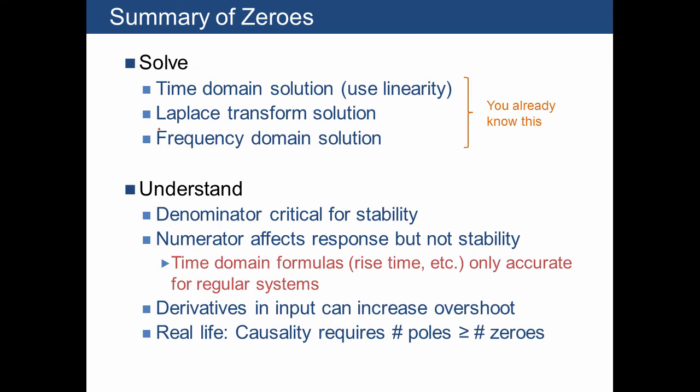Here's what we've talked about. So far, we mentioned that we can use our regular methods, which you already know, to solve for systems which have derivatives on the right-hand side. And more importantly, we talked about how to understand those systems. That denominator of the transfer function, in other words, the poles, are critical for stability, whereas the zeros can affect the response but not necessarily the stability. And we said that, in particular, one thing that we often experience with derivatives in the input is an increase in overshoot. And then finally, we said that in real life, causality requires the number of poles to be greater than or equal to the number of zeros for any true transfer function.